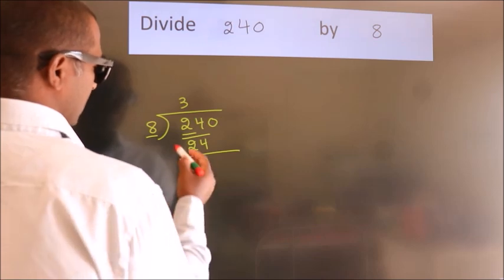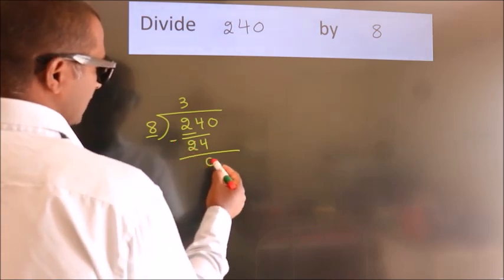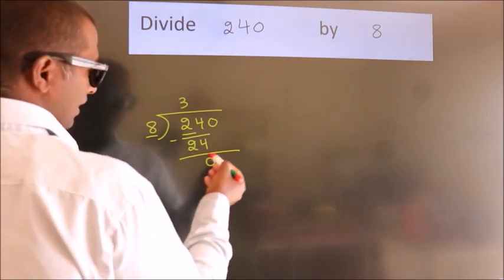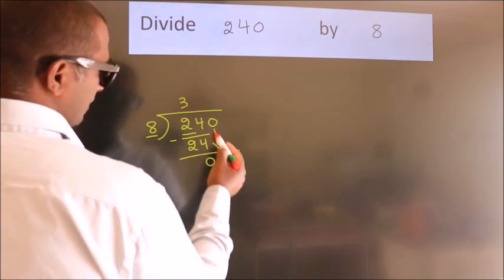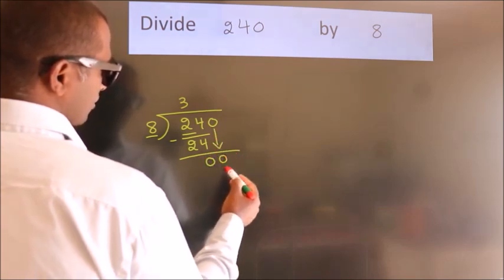Now we should subtract. We get 0. After this, bring down the beside number. So, 0 down. So, 0.